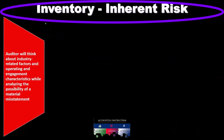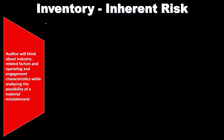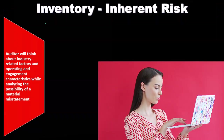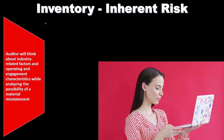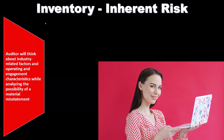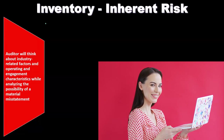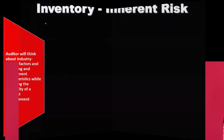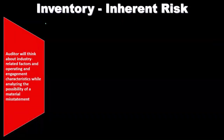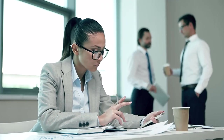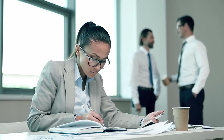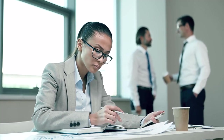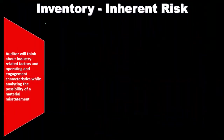First, we will consider inherent risk. Inherent risk is the risk that is just inherent within the process — if we were to remove the controls altogether, that's the risk that's just inherently present. The business doesn't have a lot of control over inherent risk, other than the fact that they chose to be in that business. They then look at those inherent risks and put in place internal controls to mitigate them and reduce the risk of material misstatement.